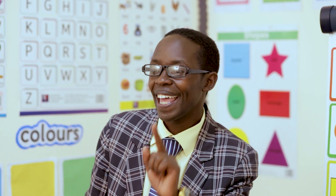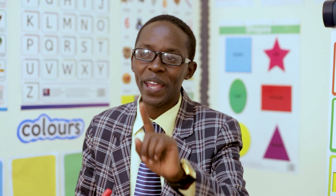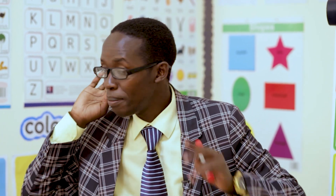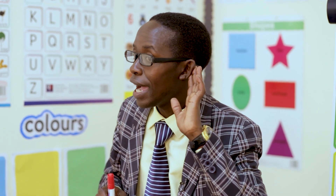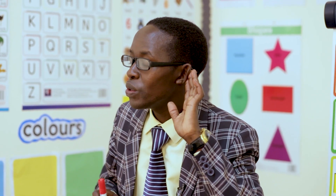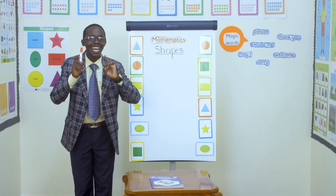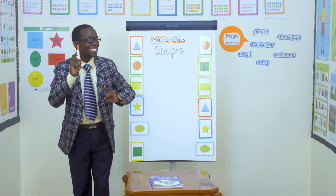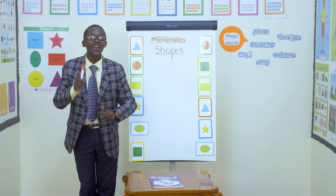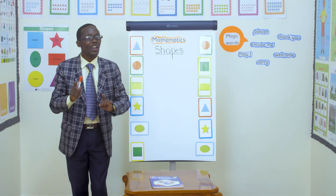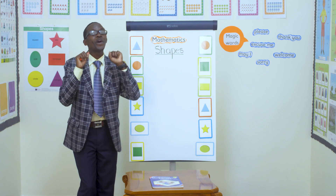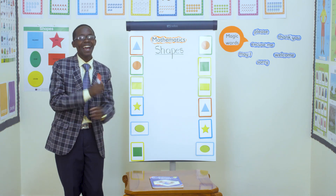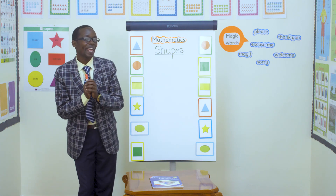Oval, square, oval, square. I want now to hear you singing like me. I'm listening. Are you ready? Are you ready? One, two, go. Triangle, circle, triangle, circle, rectangle, star, rectangle, star. Oval, square, oval, square.